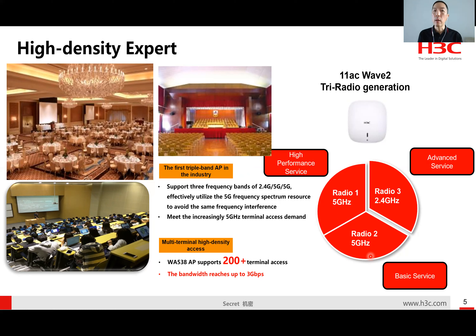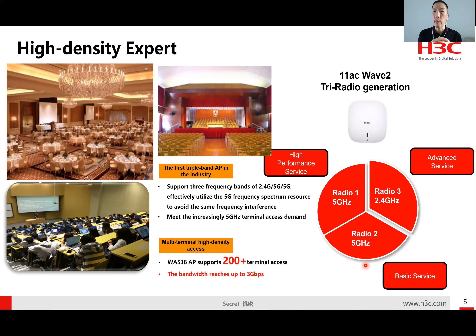We can also avoid frequency interference because one radio runs on one 40MHz channel and the other runs on another 40MHz channel, encouraging channel bandwidth reuse. This is exactly the concept behind proposing tri-radio access points — solving high-density environments like lecture rooms and event halls where many users bring devices of all generations. You cannot change the user's device, but you can build a more advanced Wi-Fi infrastructure to cater for all different devices connecting together.